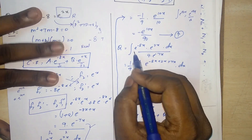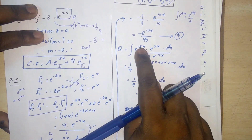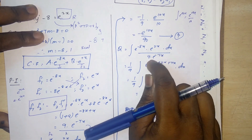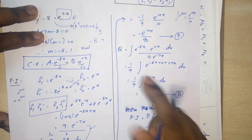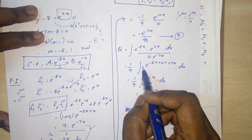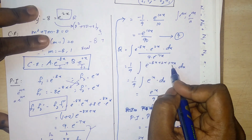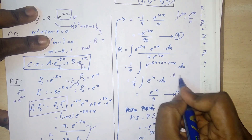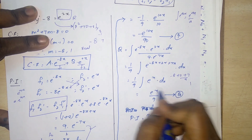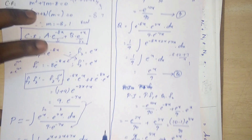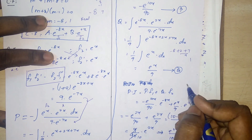To find q: the integral of f1·r divided by the Wronskian. f1 = e^(-8x) and r = e^(2x). Powers add: -8 + 2 + 7 = 1. So we integrate e^x / 9, giving q = e^x / 9.